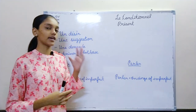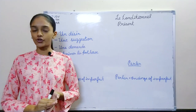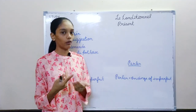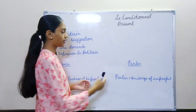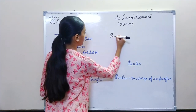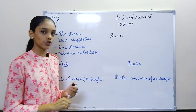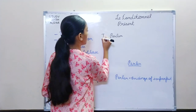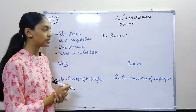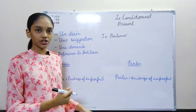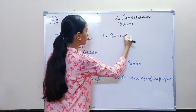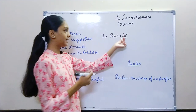Basically, we take the verb in its future simple form without the endings of avoir. For future simple, we take the infinitive — like parler. We take parler and add the endings of avoir: je parlerai, tu parlera, like that. For conditional present, we take the future simple form and remove the endings of avoir.